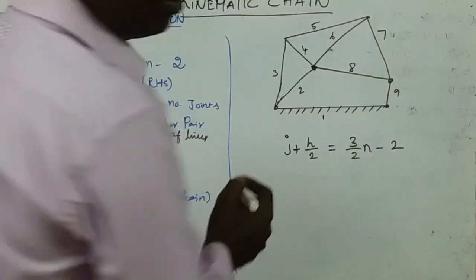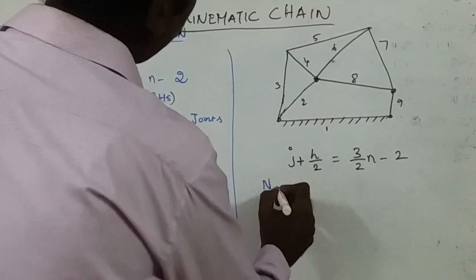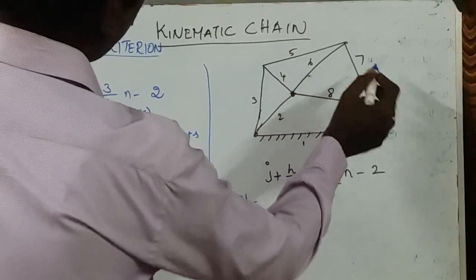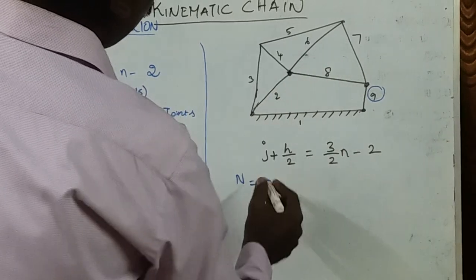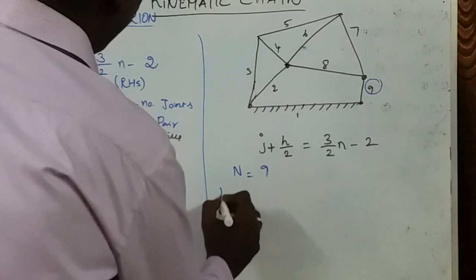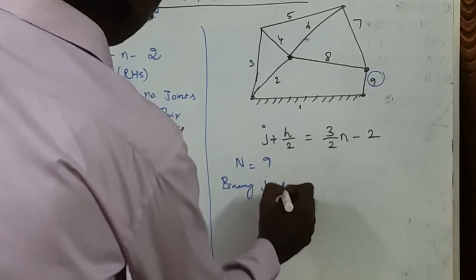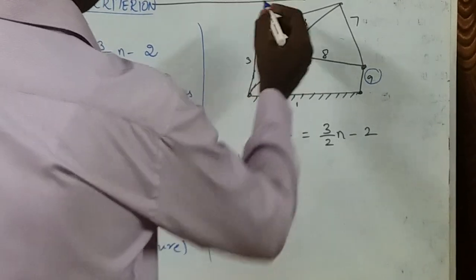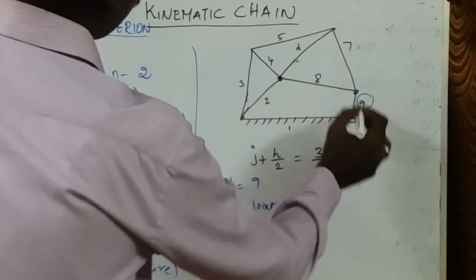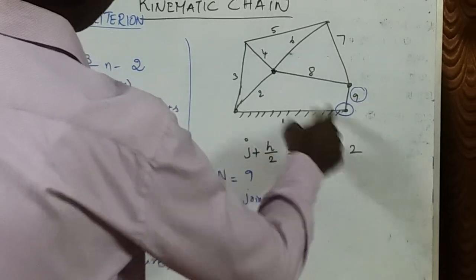Now we solve the first problem. The total number of links N is equal to 1, 2, 3, 4, 5, 6, 7, 8, 9 — the maximum number is 9, so total number of links is 9. Next, the number of binary joints: there is totally one binary joint. A binary joint means two links in a connection.